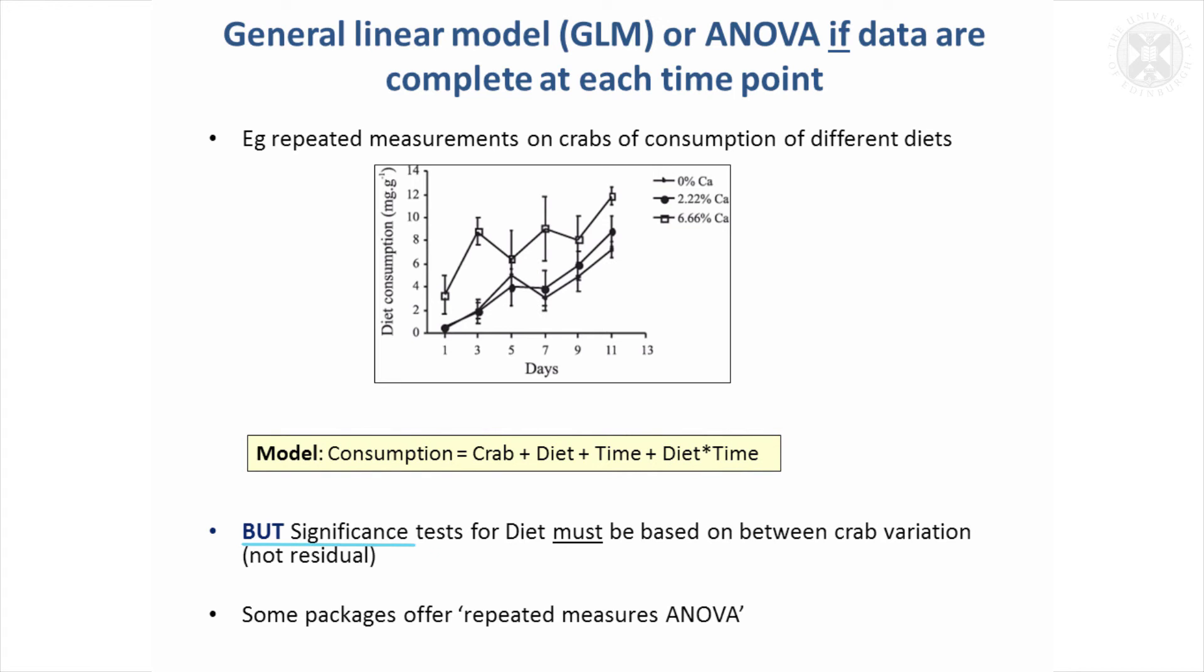The important thing is that both the significance tests for the diet and its interaction must be based on the between crab variation, not the residual. If you were just doing an analysis of variance, you'd need to understand it enough to know which unit of variation to be comparing against. The results of the F tests coming straight out of the model wouldn't be the appropriate ones. And in fact some packages will offer what they might call repeated measures analysis of variance, and they should do this automatically.